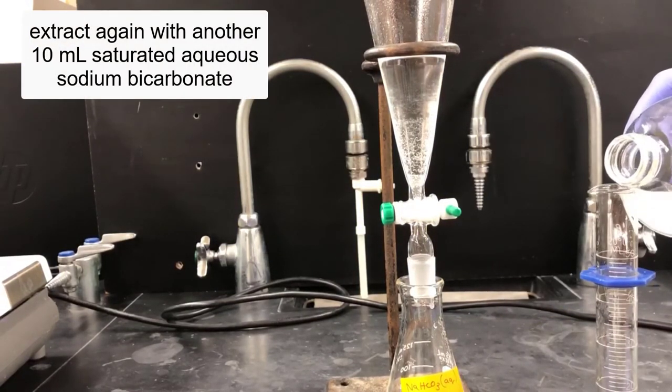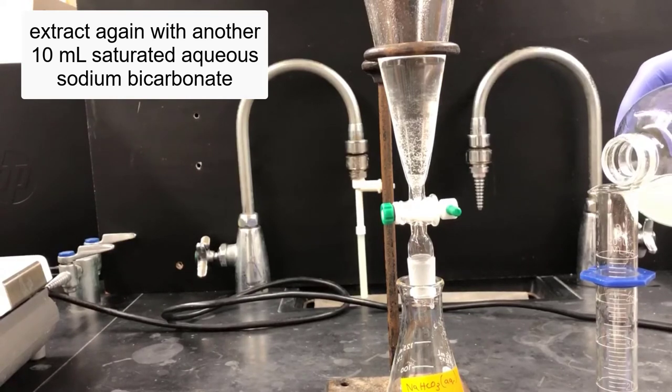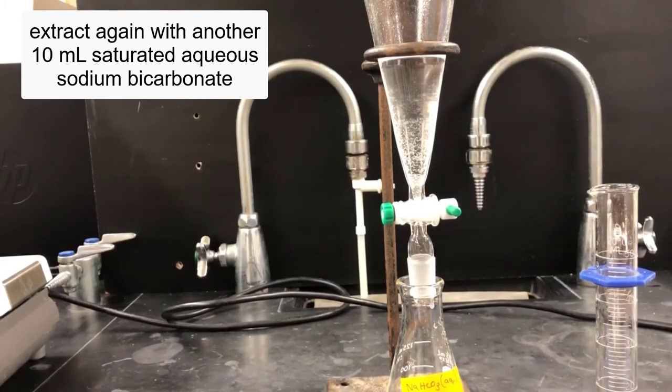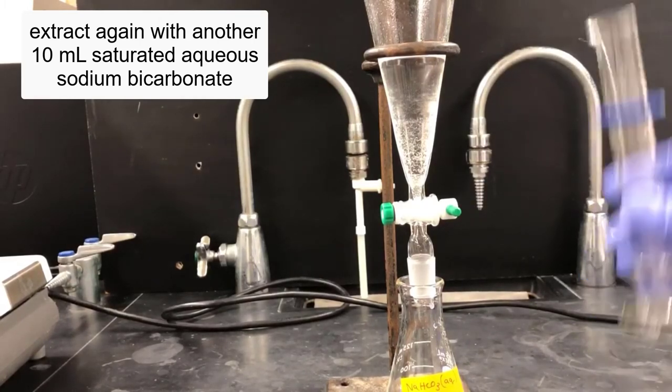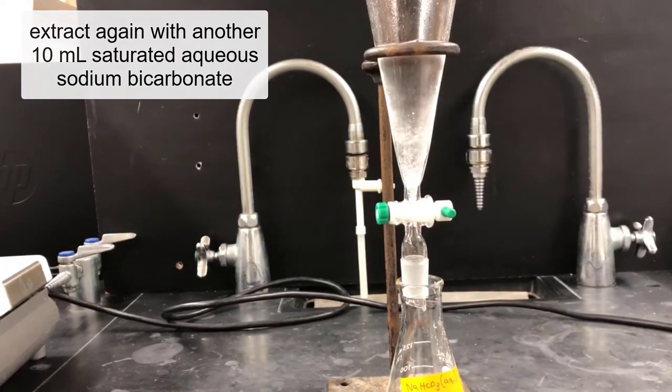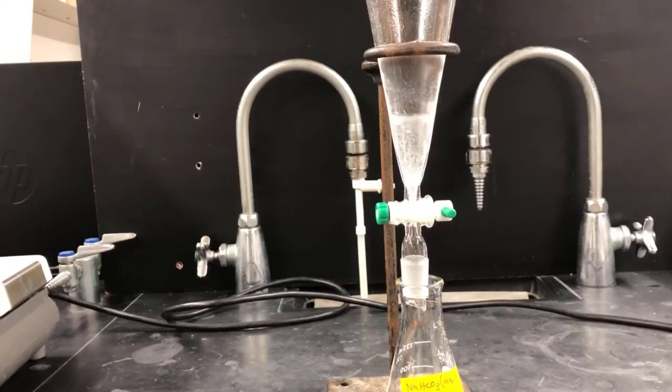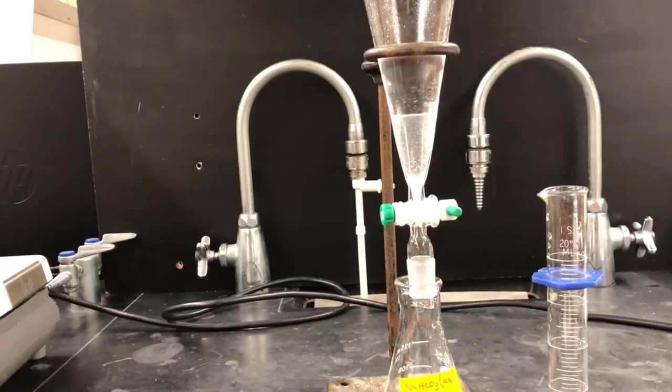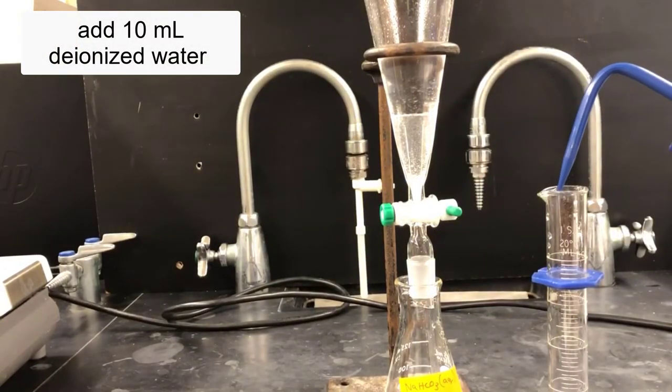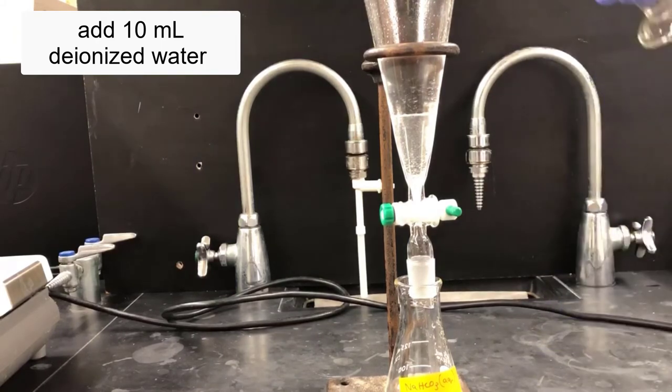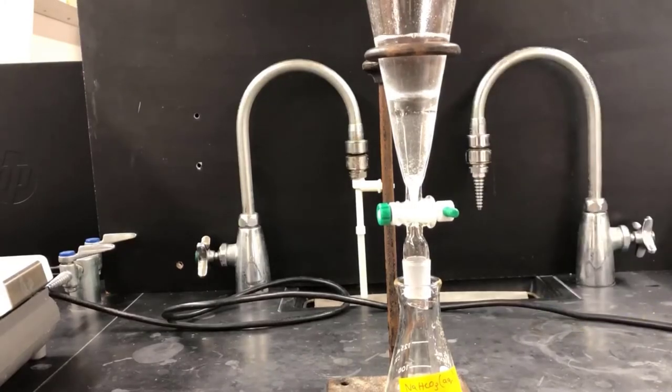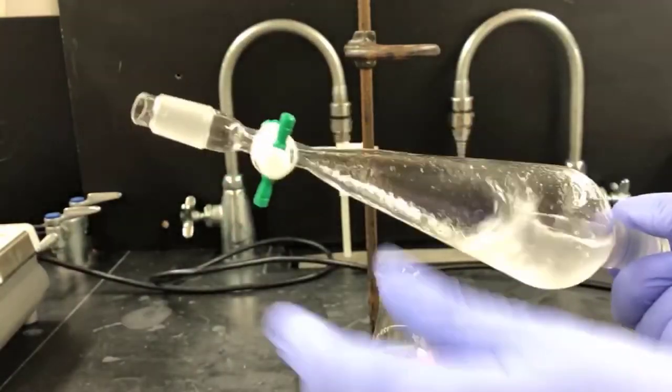Now I'll repeat the extraction with another 10 milliliters of aqueous sodium bicarbonate. The point of doing a second extraction is to try to improve the yield of extracted substances. Since extractions aren't completely efficient, it's common to do a series of successive extractions like this, where the extraction process is repeated one or two or more times. Now there's some white material that's precipitating here in the bottom, so to help dissolve that, I'm going to add 10 milliliters of deionized water. Now I'll cap the separatory funnel and shake it, inverting it, and venting it periodically to release the gases.